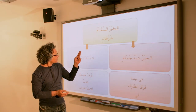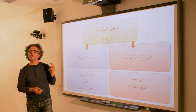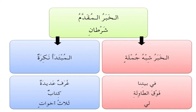The second condition is that المبتدأ ناكرة — your subject must be indefinite. Look at these examples: في بيتنا غرف عديدة — literally 'in our house are several rooms.' فوق الطاولة كتاب — 'upon the table' or 'on the table is a book.'